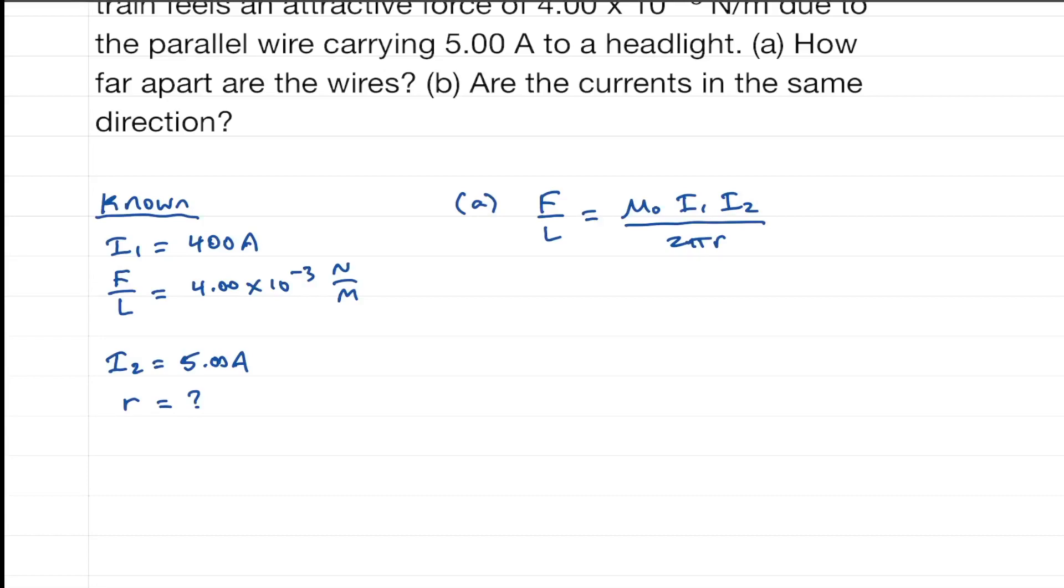Okay, so we need to solve this for r. We can multiply both sides by r, we'll get r times f over l is equal to mu 0, i1, i2, over 2 pi.